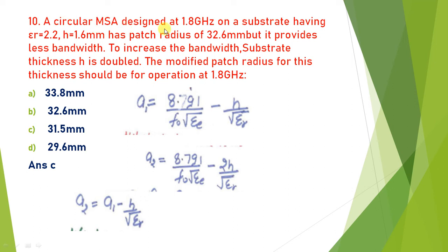A circular MSA example is given. Operating frequency is 1.8 GHz and substrate parameters are provided. To increase bandwidth, substrate thickness H is doubled. The radius formula is A1 = 8.791 / (F0 × sqrt(epsilon_e)) minus H / sqrt(epsilon_r). With H doubled to 2H, A2 = A1 minus H/sqrt(epsilon_r). Given A1 = 32.6, H = 1.6 mm, and epsilon_r = 2.2, calculating gives A2 = 31.5 mm. So the answer is C.